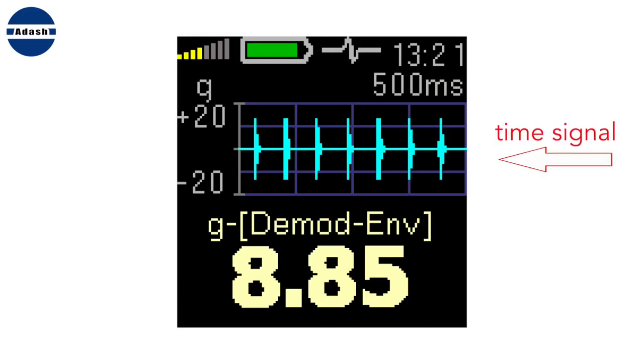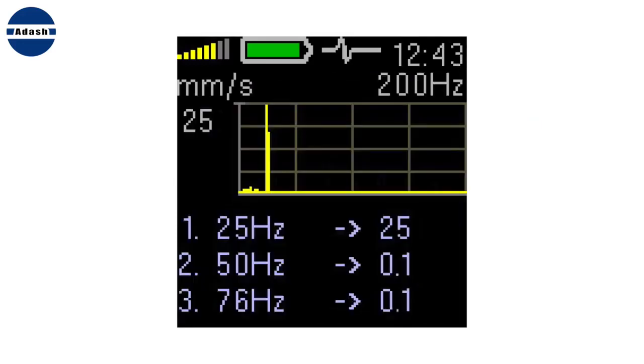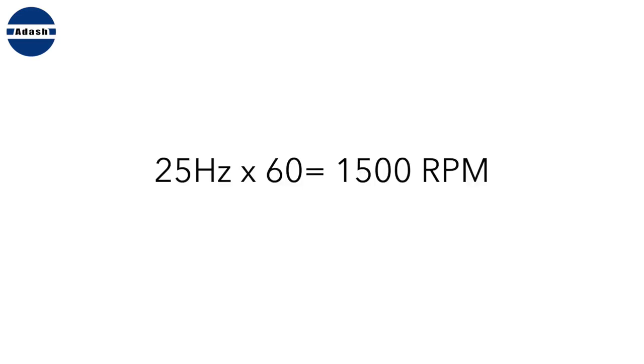You should find regular shocks there. If the velocity value is high, then you need to look at the spectrum screen. If the spectrum contains only one high line on the speed frequency, then the unbalance is the failure. For example, on this spectrum is only one high line on 25 Hz. When you multiply the 25 times 60, then you obtain 1500 rpm. If the speed is 1500 rpm, then unbalance is the failure.